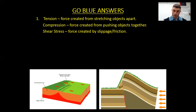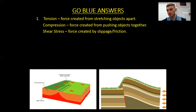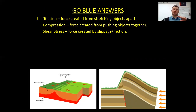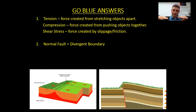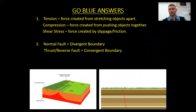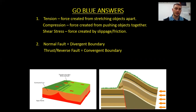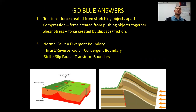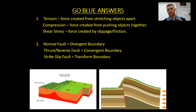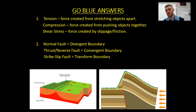Moving on to number two — faults and what boundaries they go with. Normal faults, where one plate slips down, are associated with divergent boundaries. Reverse/thrust faults, where a plate gets pushed up, are associated with convergent boundaries. And strike-slip faults, which move side to side horizontally, go with transform boundaries. Know those three faults and what boundaries they pair with.